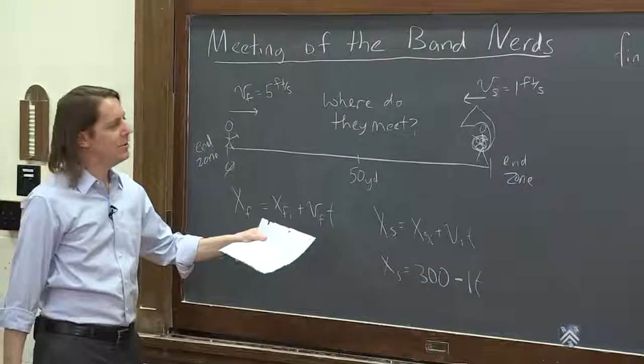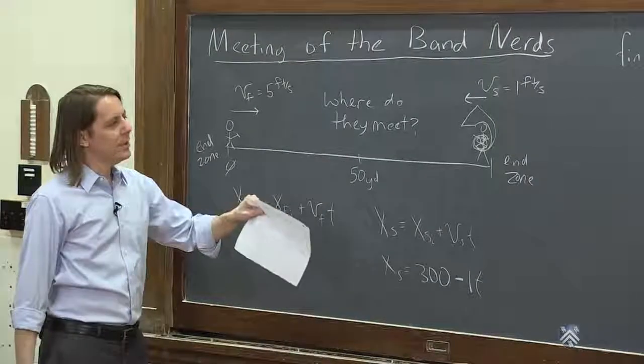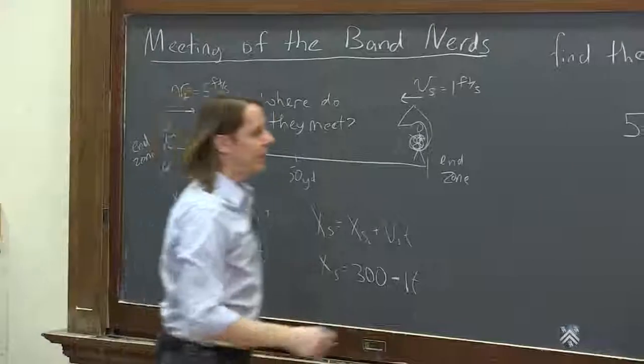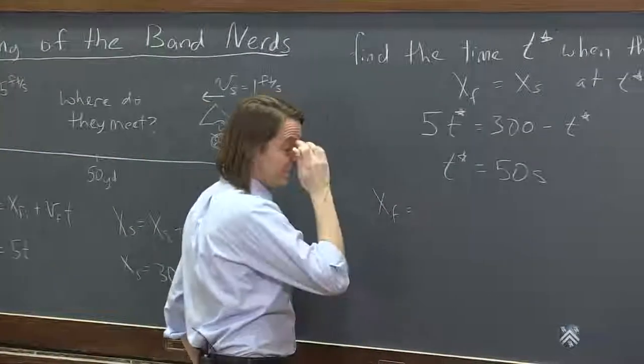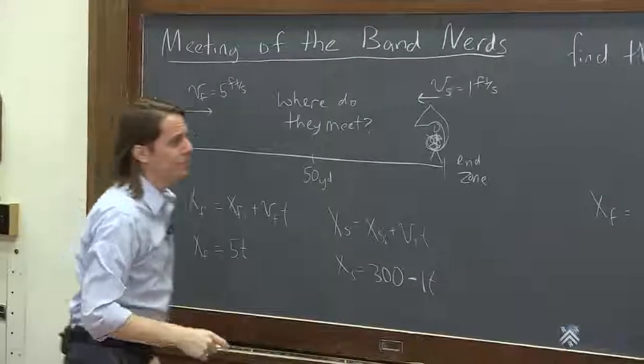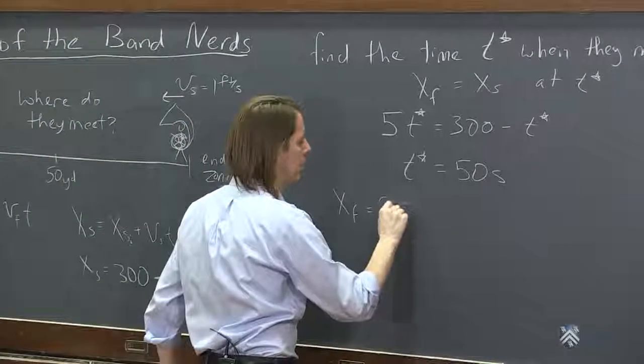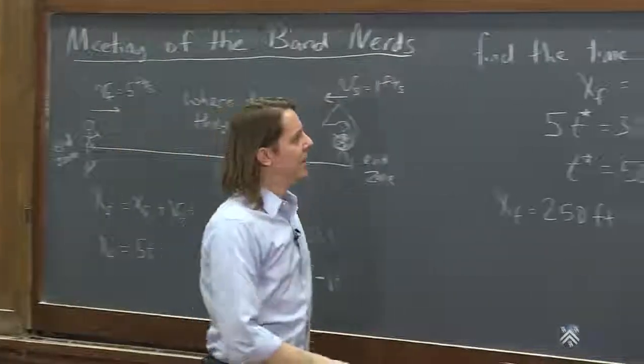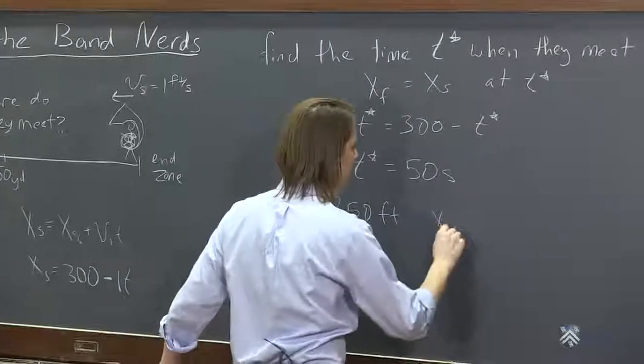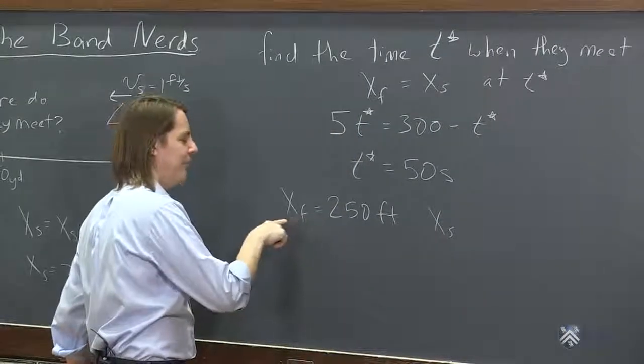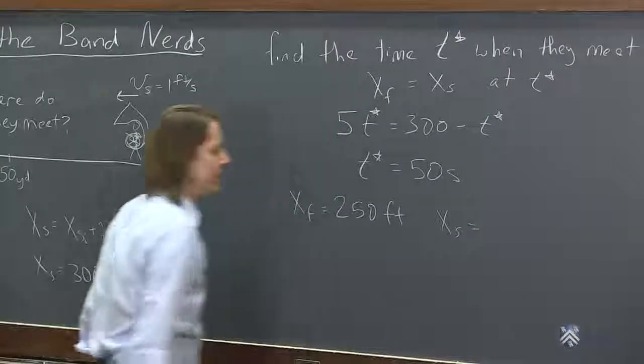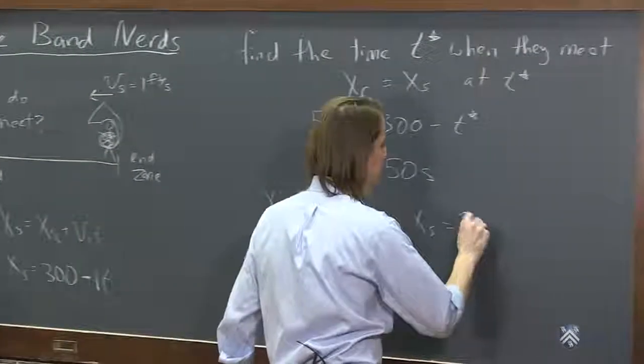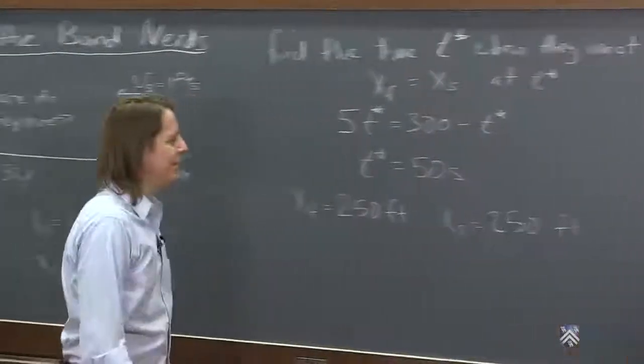That wasn't the question. It wasn't how long till they meet. It was where do they meet. So now, you just take that 50 seconds and plug it back in. So if you wanted this one's position, x final, it would be 50 seconds times 5. It would be 250 feet. And if you wanted to check your work, and I always recommend you check your work, then you could also check x slow, not final, I'm sorry, the fast, x fast. The slow person's position would be 300 minus 1 times 50. 300 minus 50, 250. Look at that. So sure enough, they are in the same place, 250.